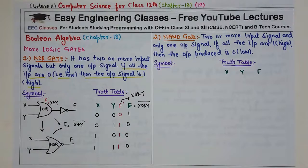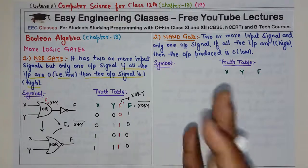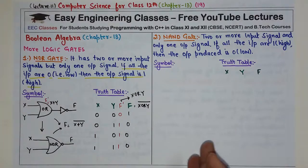Now let's see about the NAND gate. Jaise NOR gate hai, similarly agar AND gate ke aage ek NOT gate laga dein, then it becomes a NAND gate.